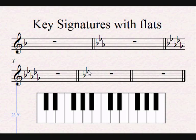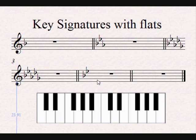If you look at this key signature, look at the second last flat — it is affecting the B. That would be B flat major, or the relative minor of B flat major — 1, 2, 3, 4 — G minor. So a song starting with this key signature is written in either B flat major or G minor.